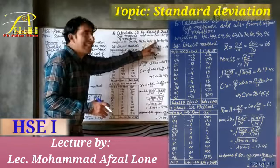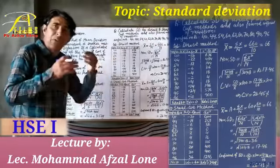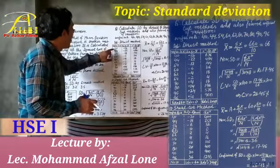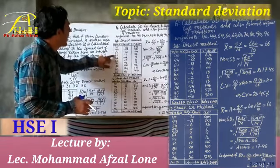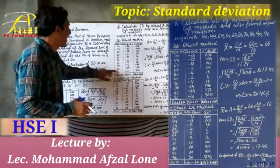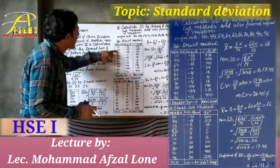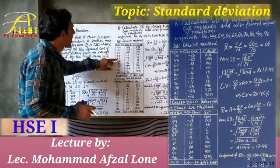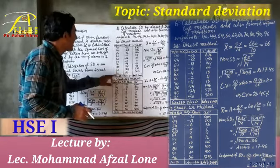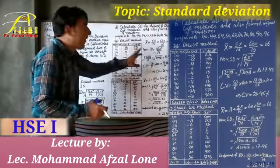The values are: 40, 44, 54, 60, 62, 64, 70, 80, 90, and 96. The total — summation of x — is 40 + 44 + 54 + 60 + 62 + 64 + 70 + 80 + 90 + 96. Summation of x is equal to 660.